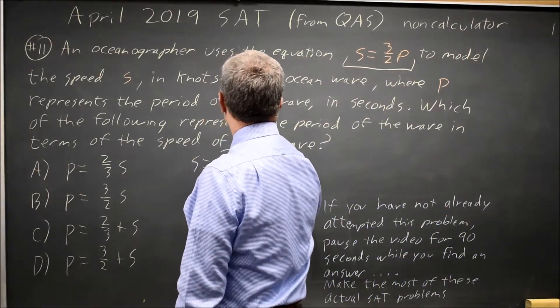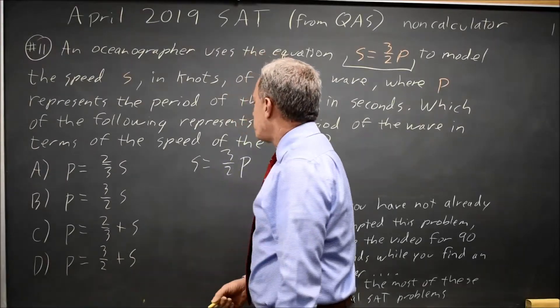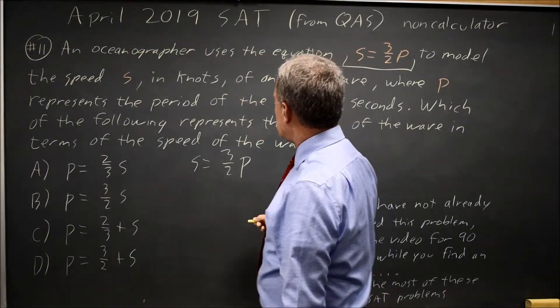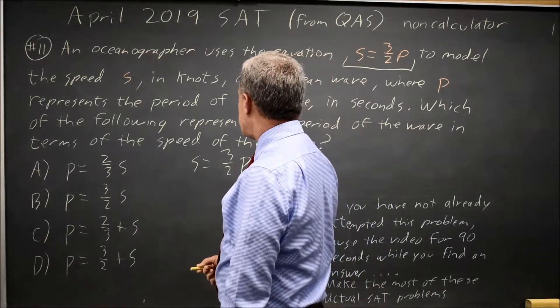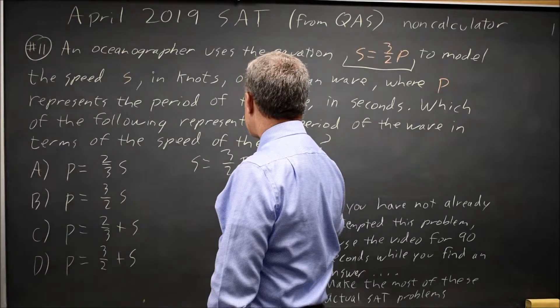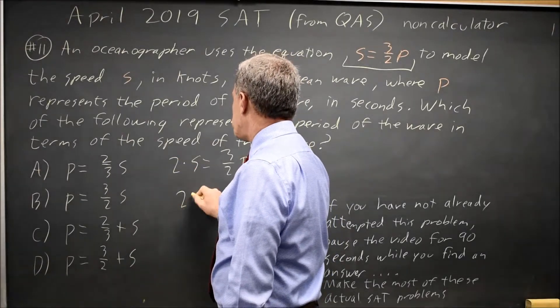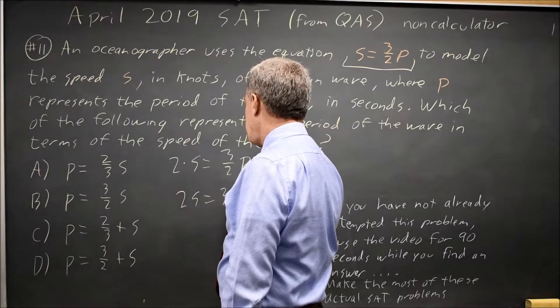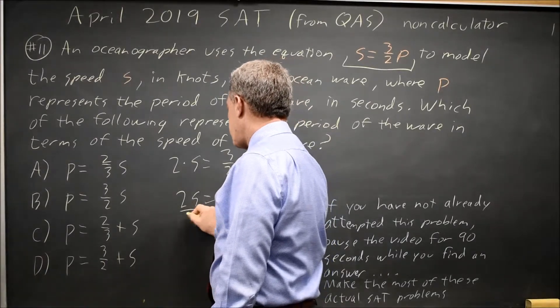Given S equals 3 halves P, to get P by itself, I'm going to either multiply one step by 2 thirds or multiply both sides by 2, which gives me 2S equals 3P, and then divide both sides by 3.